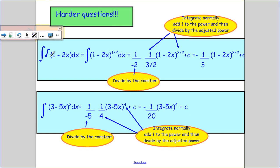Some harder questions. So if I integrate the square root of 1 minus 2x, there's two things I need to do. Well, firstly, the square root is the same as a half.